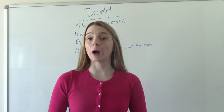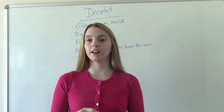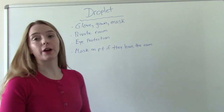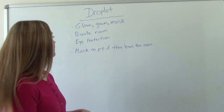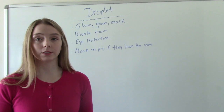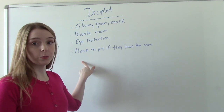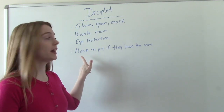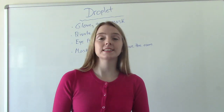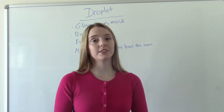Now let's talk about droplet precautions. If your patient is on droplet precautions, you need to wear your gloves, gown, and a mask. They need to be in a private room, and you also need to wear eye protection — goggles. If the patient leaves the room for any reason, they also need to wear a mask. These diseases can be spread through coughing, sneezing, and even talking.